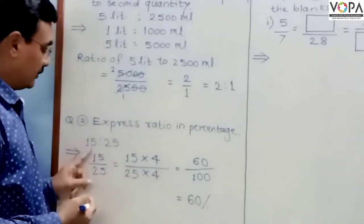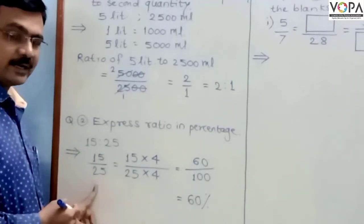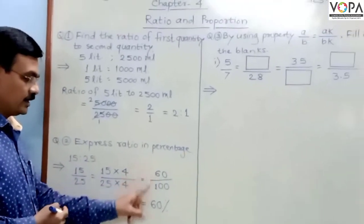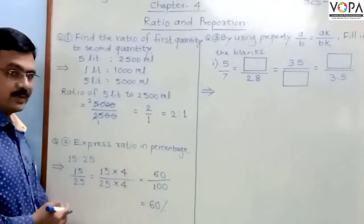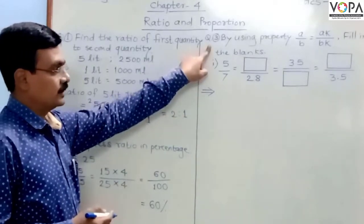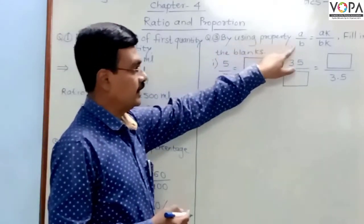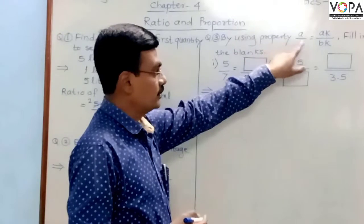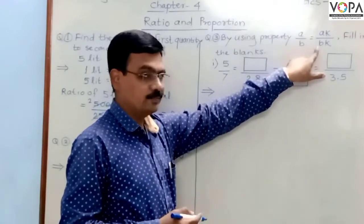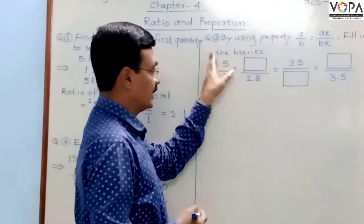So the ratio 15 upon 25 is now converted into percentage as 60%. Let us have another example: by using the property a upon b equals ak upon bk, fill in the blanks.